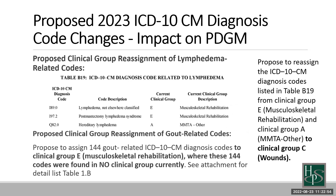On the next screen, 144 gout-related ICD-10 codes have been moved to the clinical group musculoskeletal rehab — these gout-related codes did not have a clinical grouping previously. These codes were completely non-existent in the grouping model before, and now 144 are being added. That is attachment table 1B, also found in your attachments in addition to the PowerPoint screens.